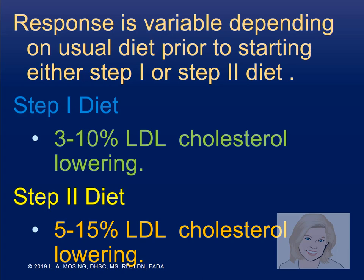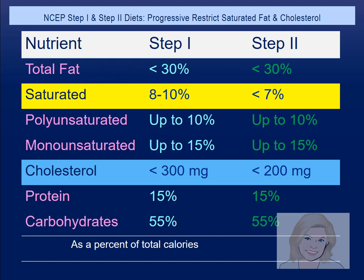There are two dietary approaches: a Step 1 or Step 2 diet. Step 1 leads to a 3 to 10% reduction in LDL cholesterol; Step 2 leads to 5 to 15%. The difference between the two is the amount of saturated fat. If someone was having a hamburger every day at lunch, we need to have them reduce their saturated fat — talking about veggie burgers and salads and other plant-centered foods. The amount of cholesterol in the diet matters less; it's the saturated fat that makes the biggest difference.